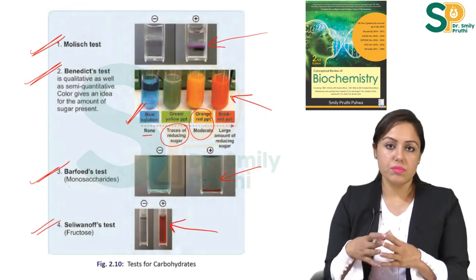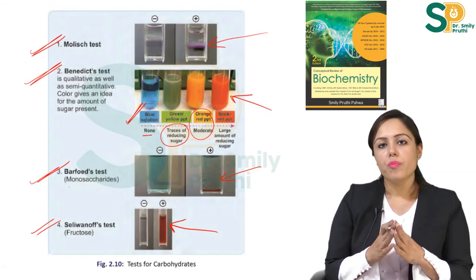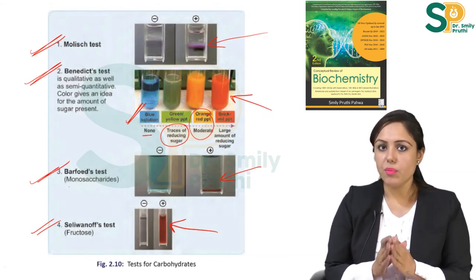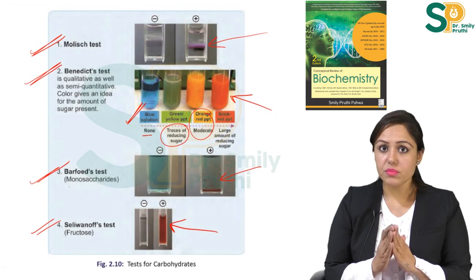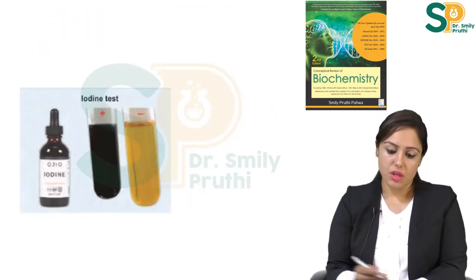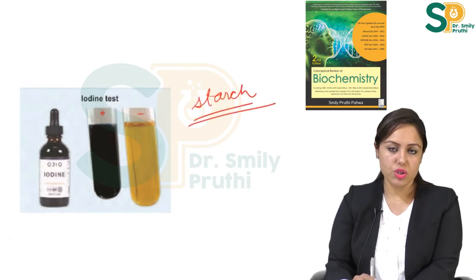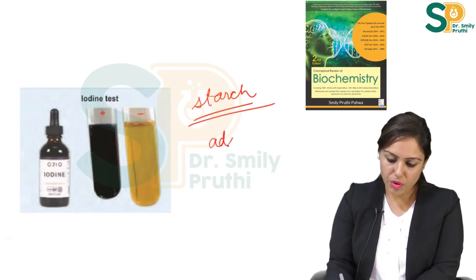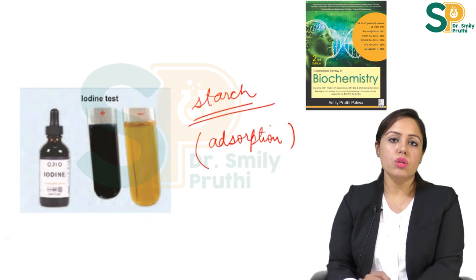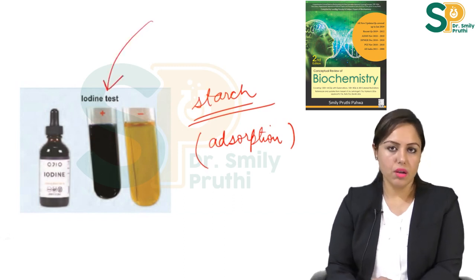In Barfoed's test, red colored precipitates within the first two minutes indicate a monosaccharide positive result. For Seliwanoff's test, fructose gives a positive red colored solution, as fructose is a keto sugar. The iodine test is positive for polysaccharides, especially starch, due to the phenomenon of adsorption of iodine on the polysaccharide, giving a bluish black color.